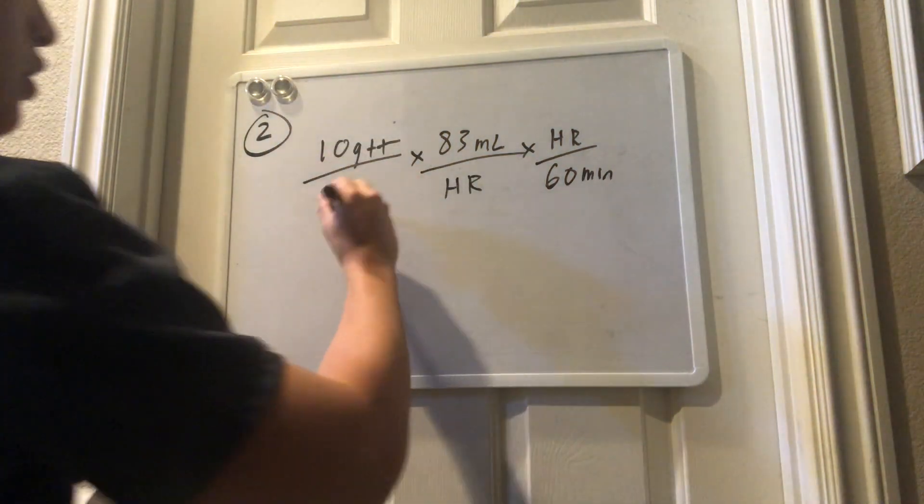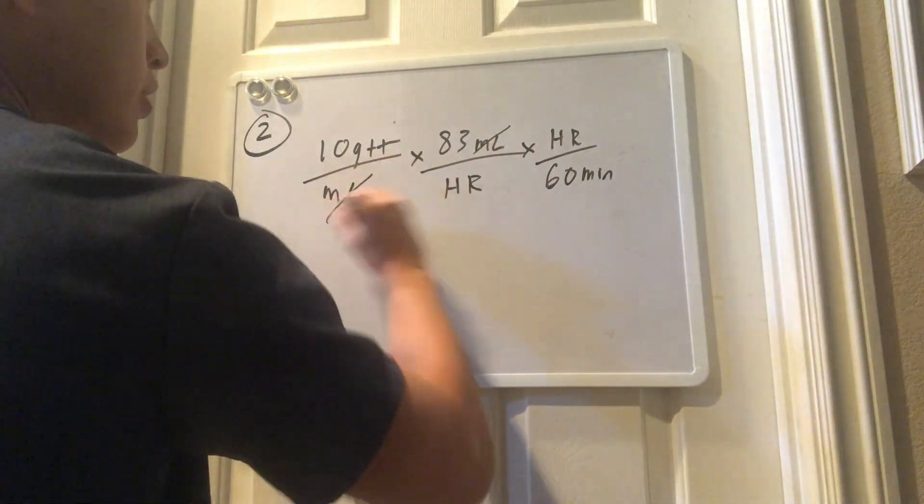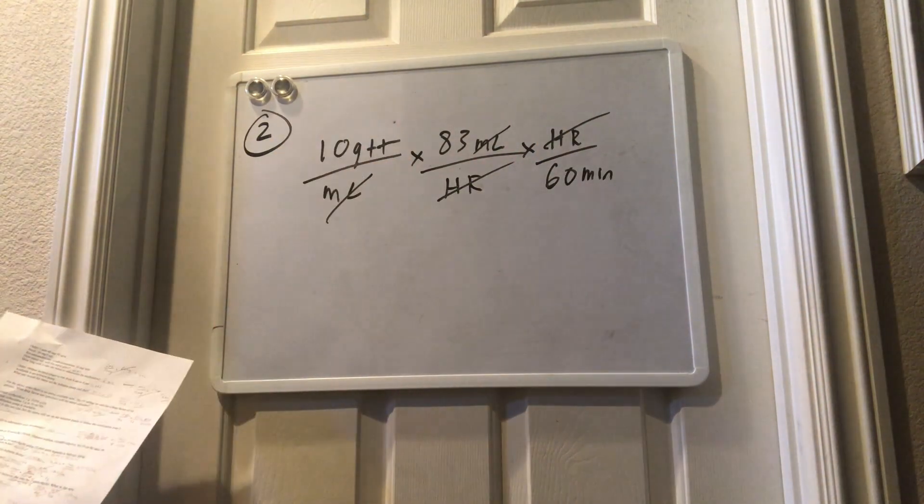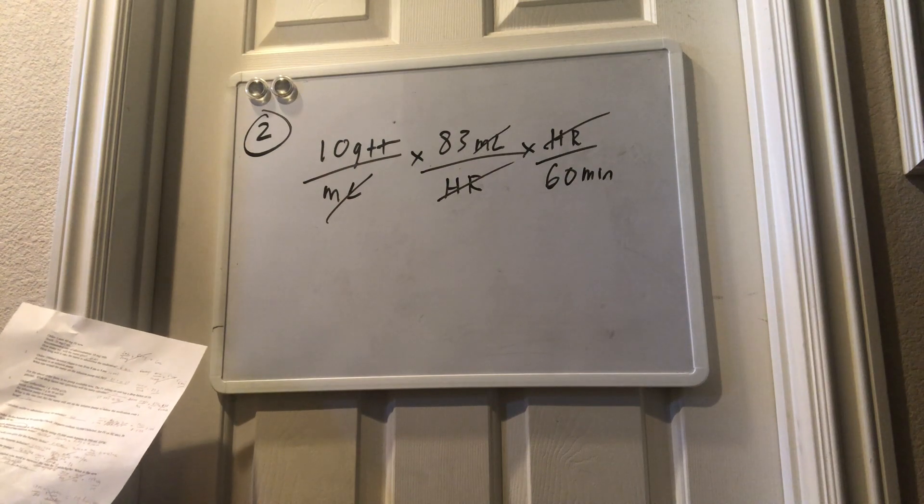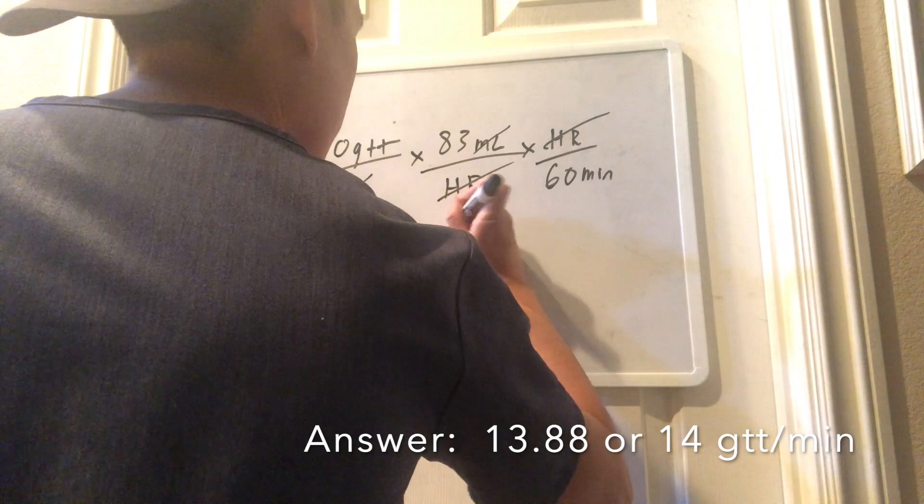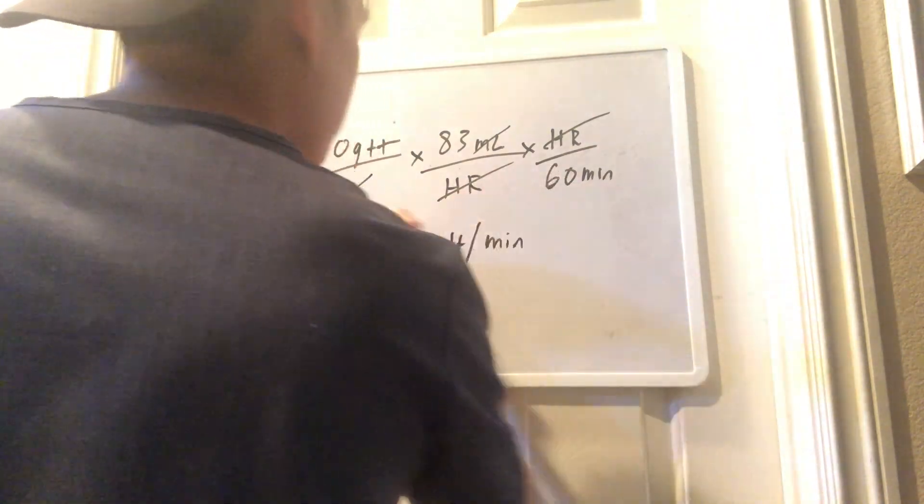So, if you set it up like this, you can automatically cross the mLs, you cross the hours, and you're going to calculate 10 times 83 divided by 60. And you're going to be left with about 14 drops per minute.